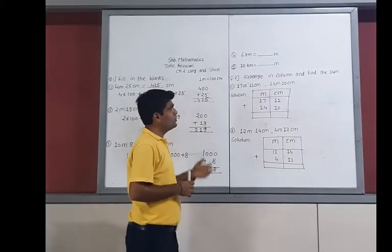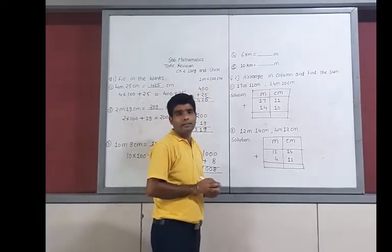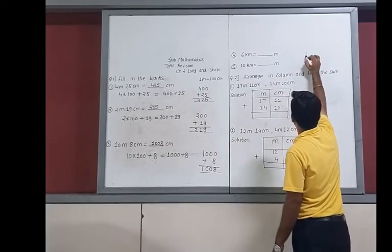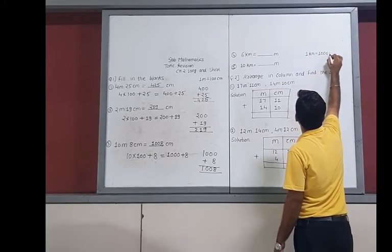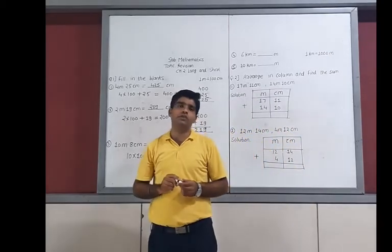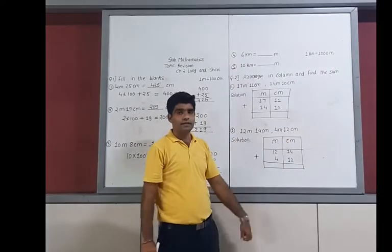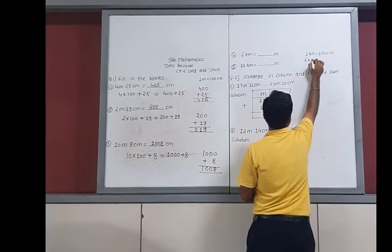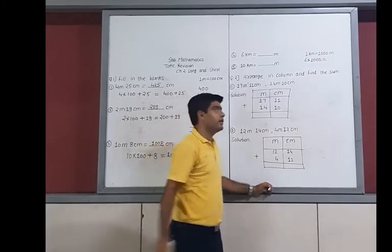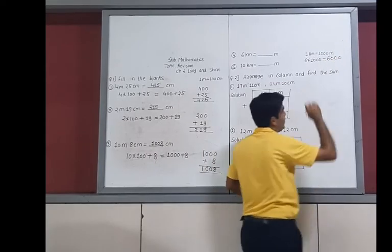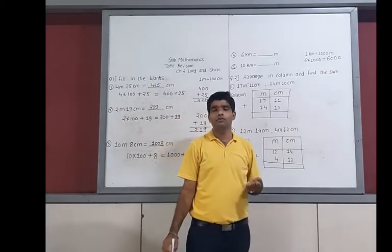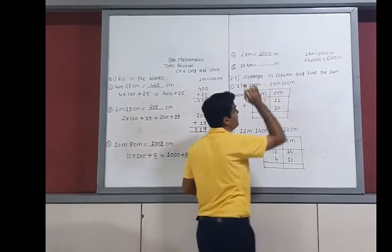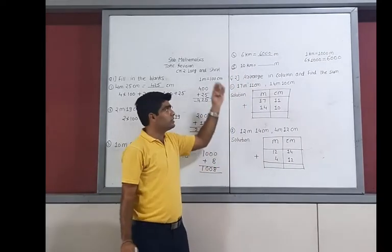Now for question number 4: 6 kilometers is to be converted into meters. As already discussed, 1 kilometer equals 1000 meters. So 6 kilometers equals 6 multiplied by 1000, which gives 6000. Your answer is 6000 meters. 6 km is converted into 6000 meters.